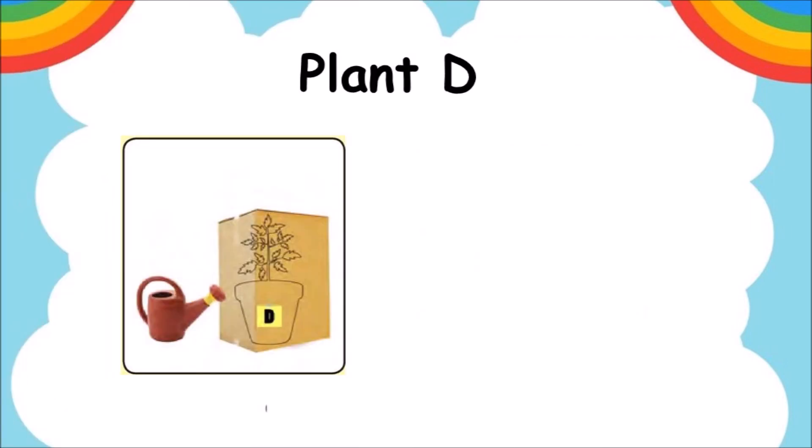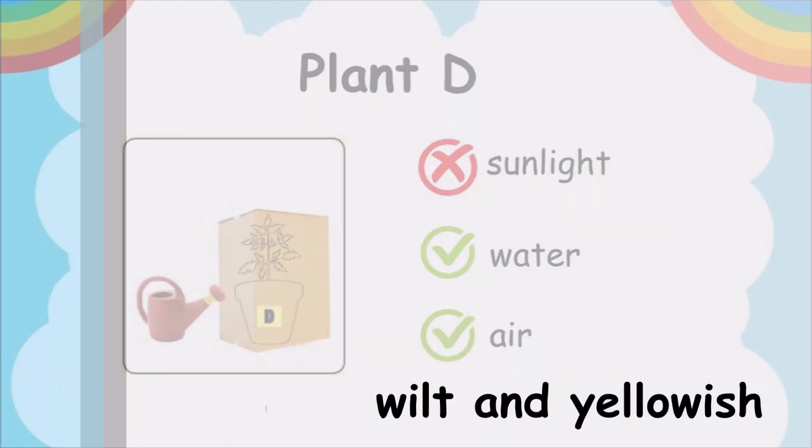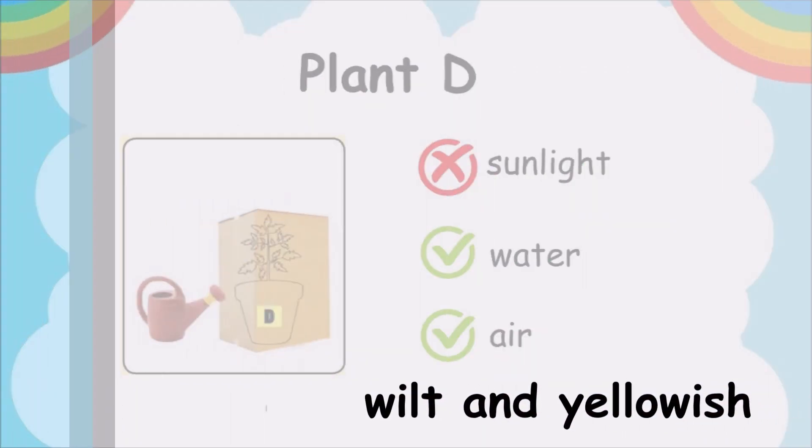Now let's look at Plant D. Plant D does not receive sunlight because it is placed inside a box. It receives water and air. So what will happen to Plant D after 2 weeks? Plant D will wilt and the leaves will become yellowish.